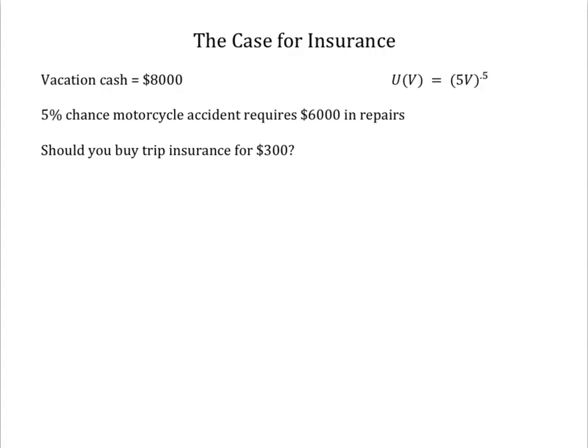Let's assume that the utility you receive from income is shown as the square root of 5V. Really, any utility function that diminishes with income could suffice to make our point.